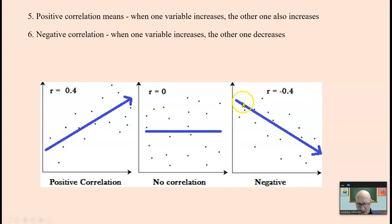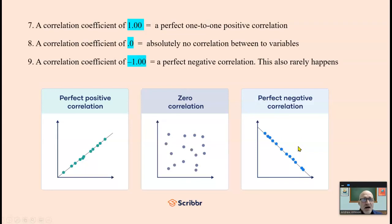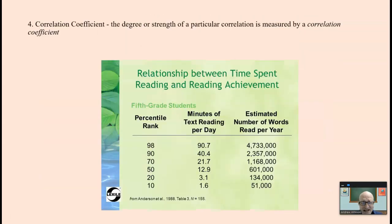Negative correlation means as one goes down, the other one decreases. However, we cannot say that minutes of reading caused achievement test scores to go up or achievement test scores cause minutes of reading. We cannot say that one is the cause of the other. There is just a strong degree of relationship between the two.